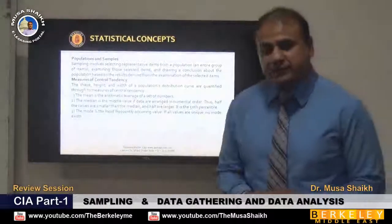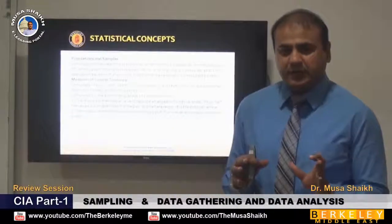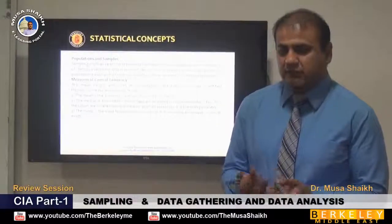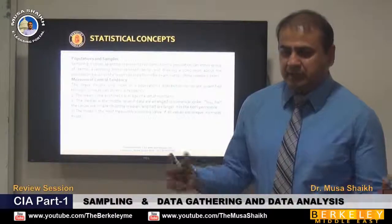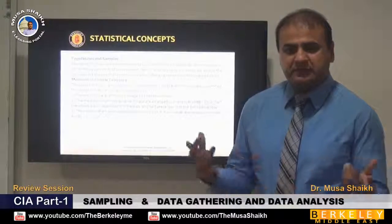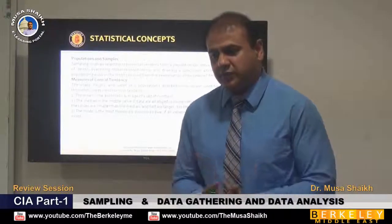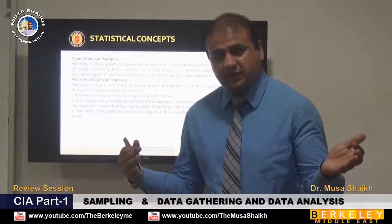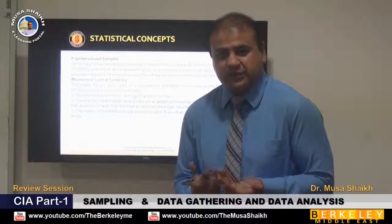What is the population? For example, the population of any country, or the documents of any company — like sale invoices and purchase invoices. If we're talking about big companies like Procter & Gamble or Nestle and their sales invoices, they may have hundreds of thousands of sales invoices. As an auditor, we cannot check everything.